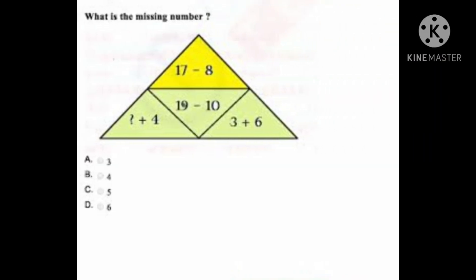This one: 17 minus 8, then 19 minus 10, 6 plus 3, and question mark plus 4. You have to find out which number will be the appropriate one in place of the question mark. First, calculate all three, then you will get the answer.